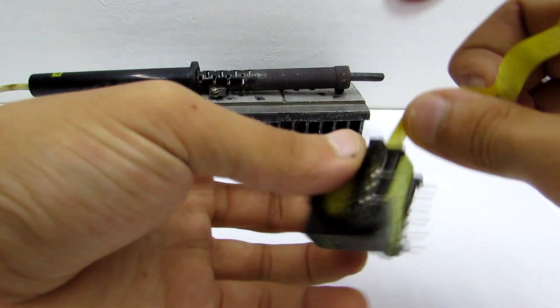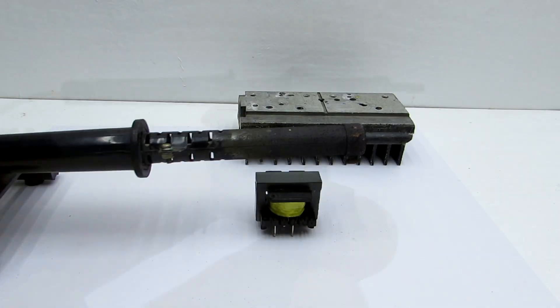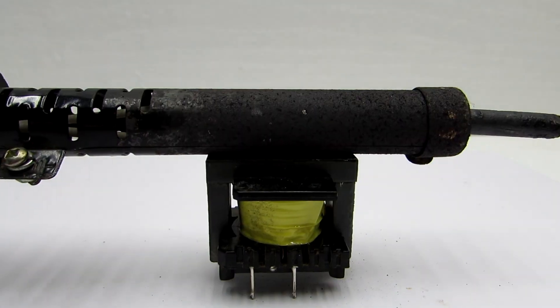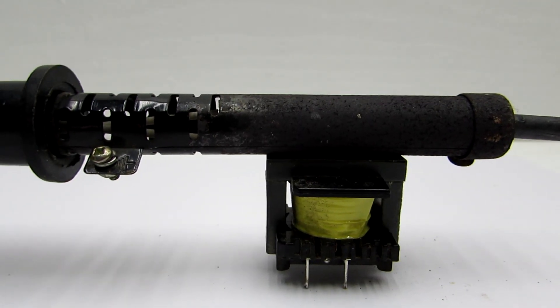Install the transformer under the body of the soldering iron, where the heating element is located. The main thing is absence of gaps for even heating.